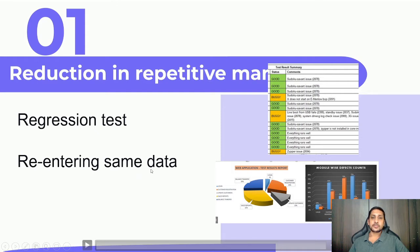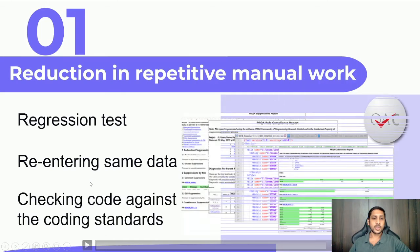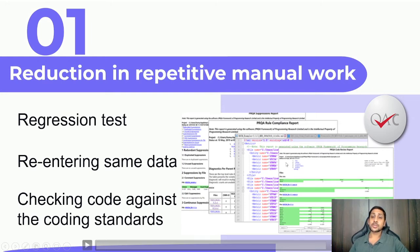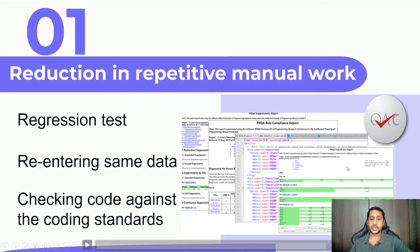Another example is re-entering the same data. After execution, we need to mark test cases as passed or failed in a spreadsheet — that is repetitive work. Using a tool, we can fill all these things directly, reducing repetitive manual activities. Also, checking code against coding standards is a lengthy process — someone going through it manually may miss items. By using a tool such as QAC (Quality Assessment Control), we can easily compare against coding standards. This is a repetitive task every time you release software, and using a tool reduces it.